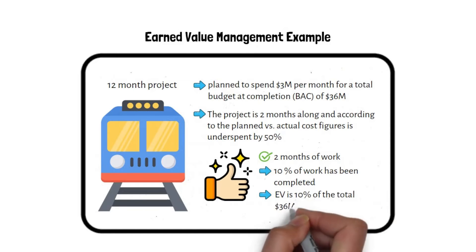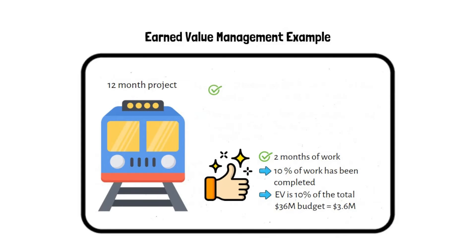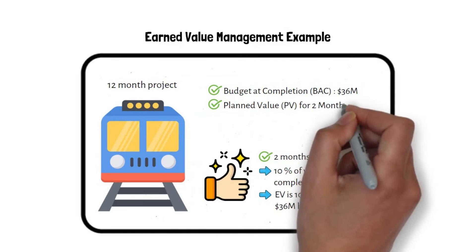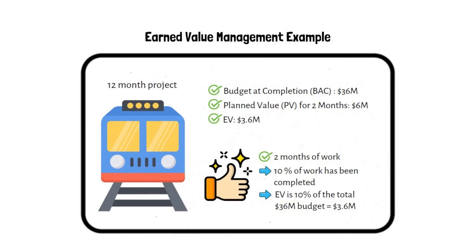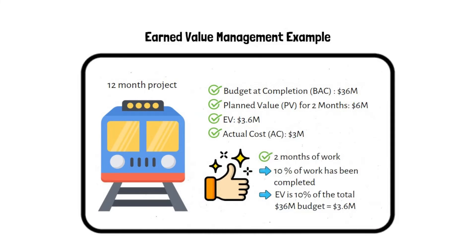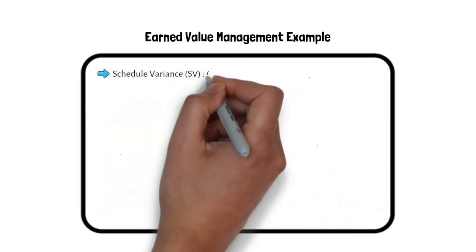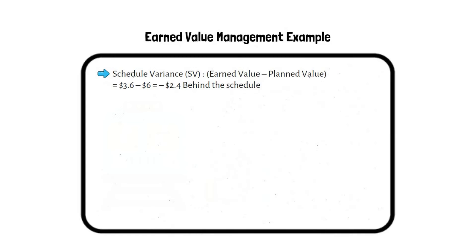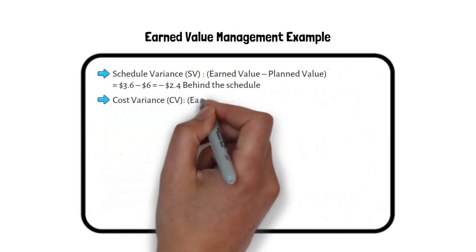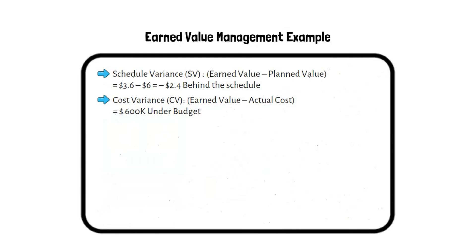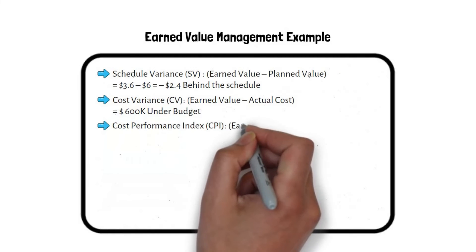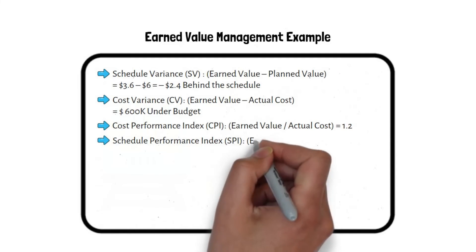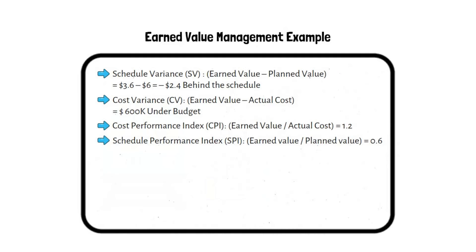But after two months of work, only 10% of work has been completed. So Earned Value is 10% of the total 36 million dollar budget, which is 3.6 million dollars. Budget at Completion: 36 million dollars. Planned Value for two months: 6 million dollars. EV: 3.6 million dollars. Actual Cost: 3 million dollars. Schedule Variance: EV minus PV equals 3.6M minus 6M equals minus 2.4 million dollars — behind schedule. Cost Variance: EV minus AC equals 600,000 dollars — under budget. Cost Performance Index: EV divided by AC equals 1.2.